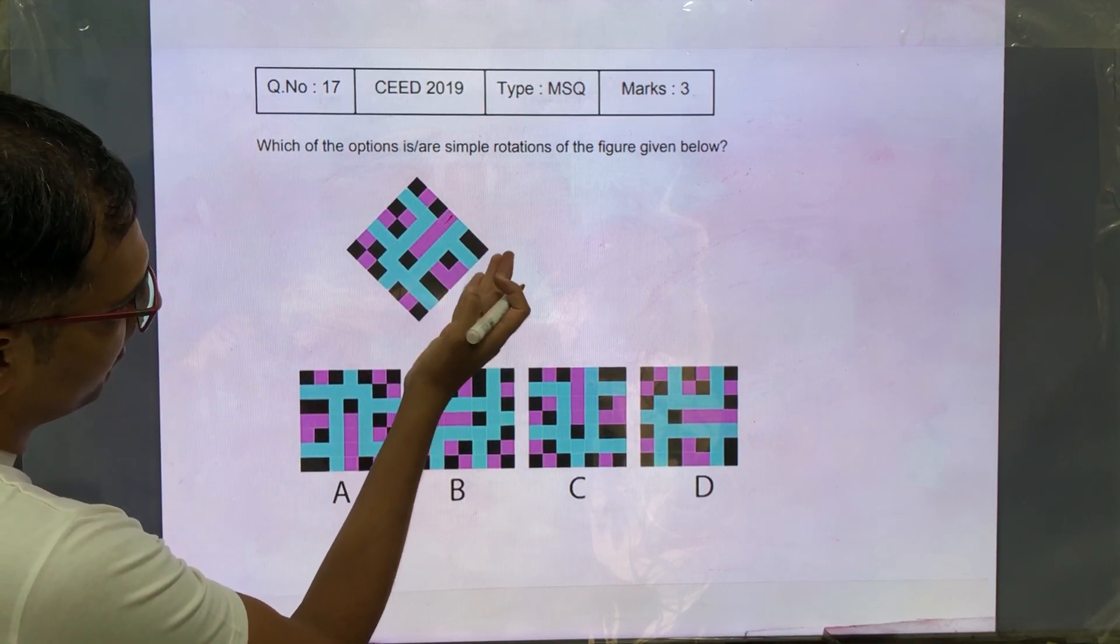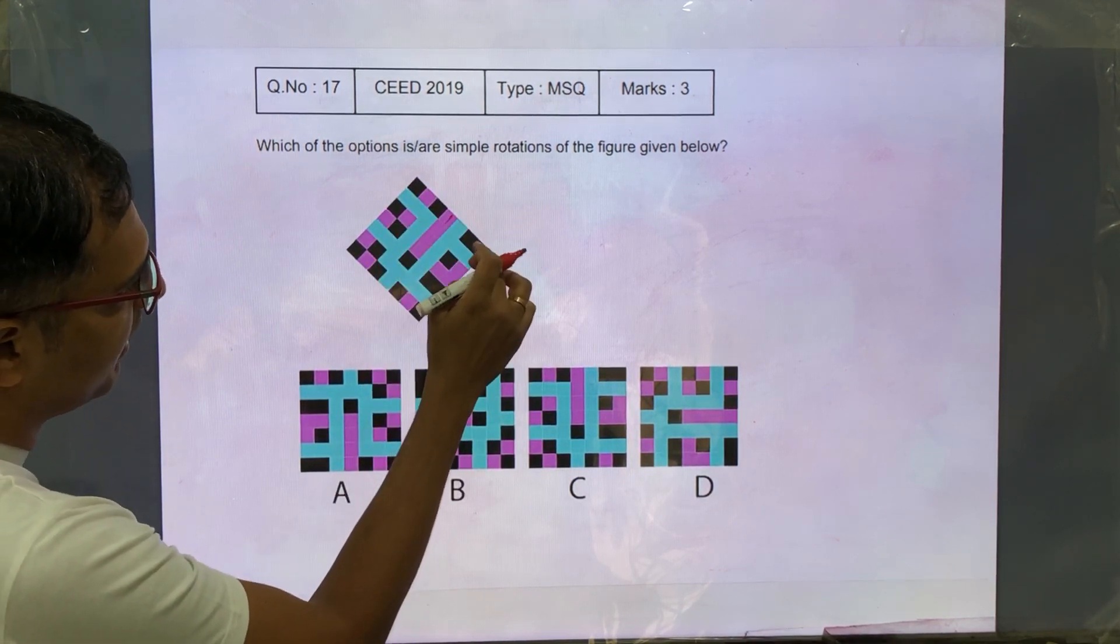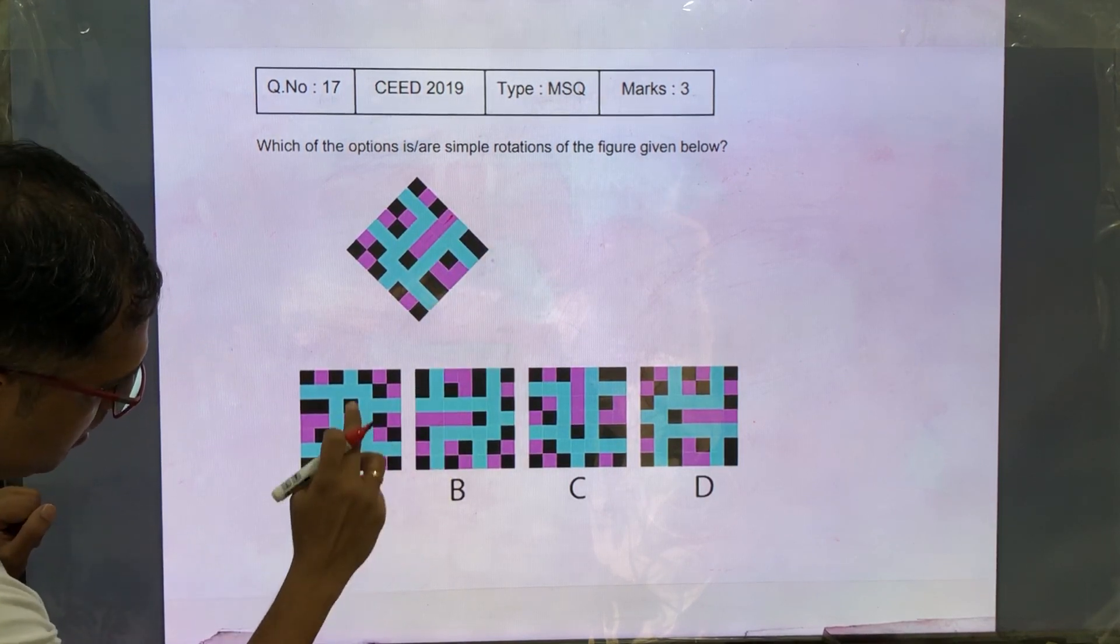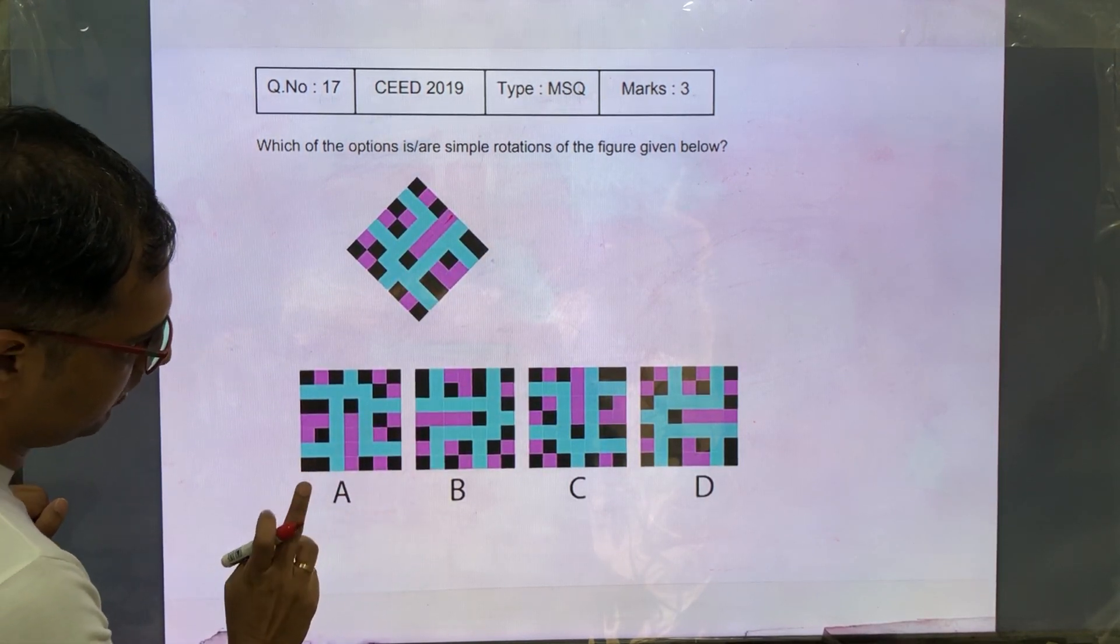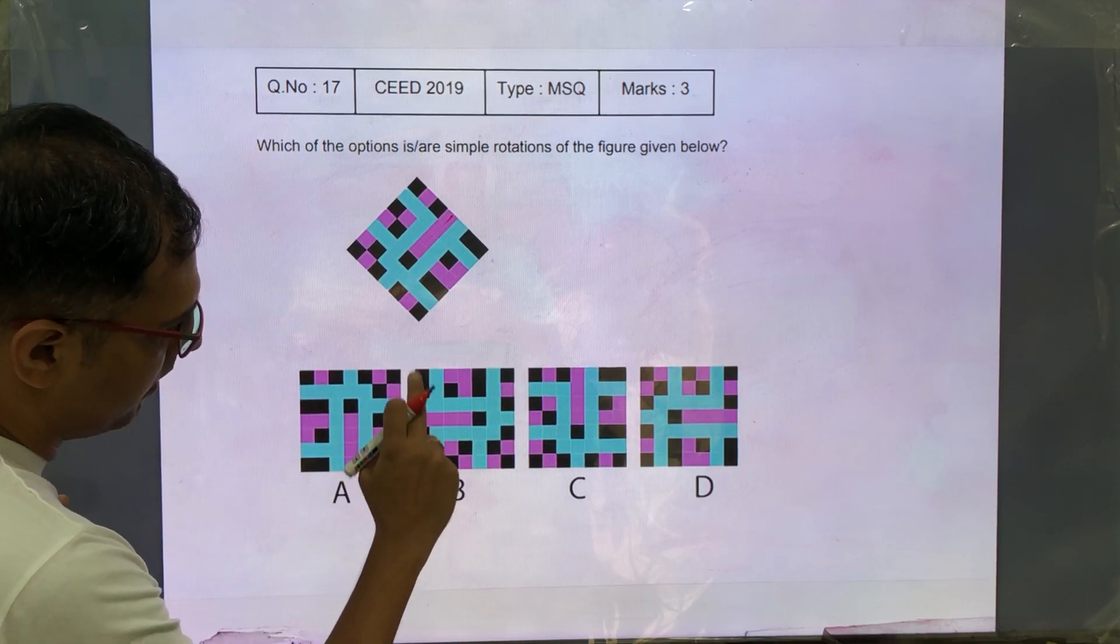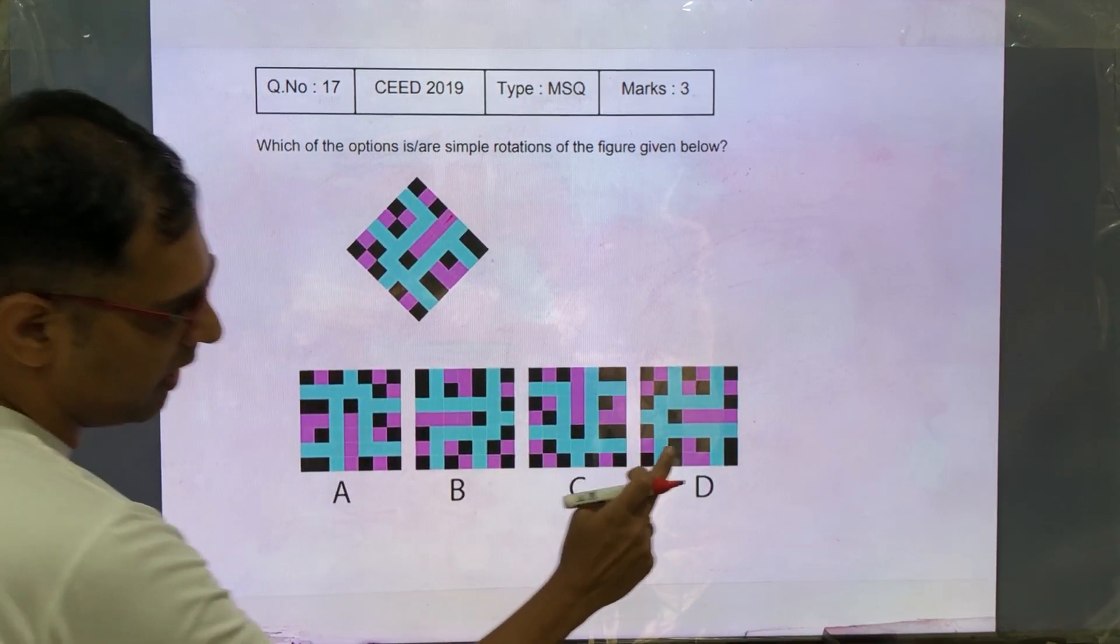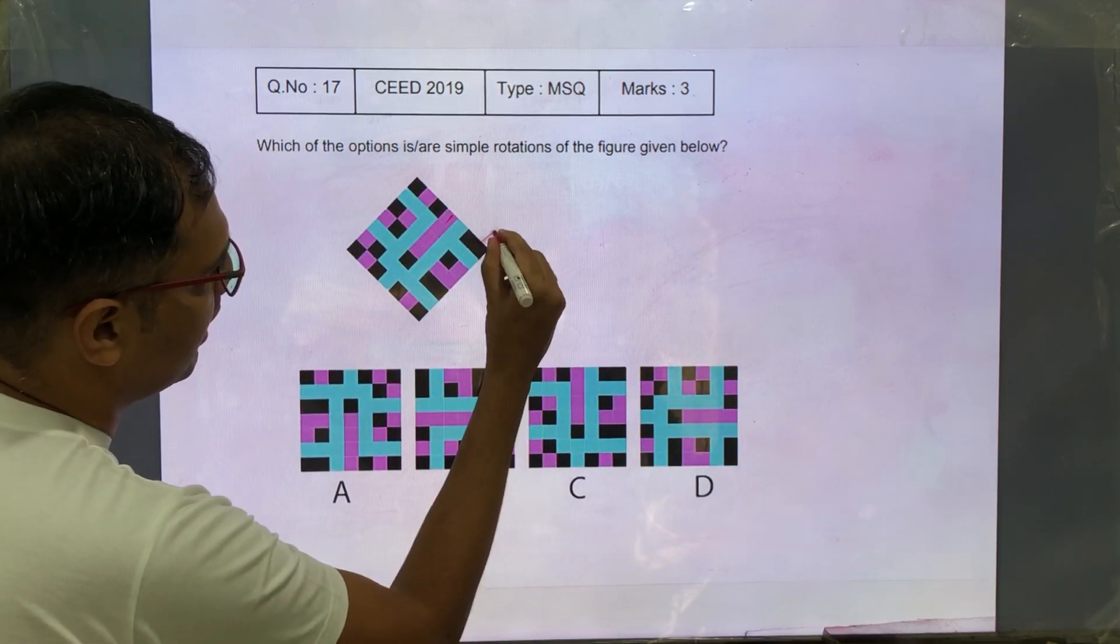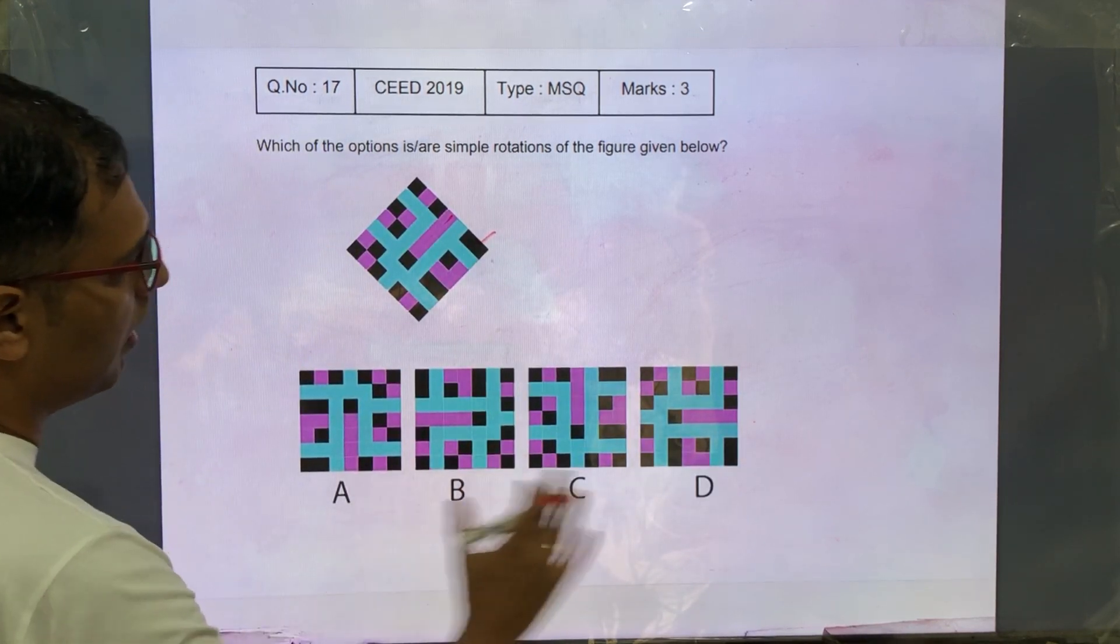Now, after that, going in a clockwise direction, we have a gap and then 2 brown. So gap and 2 brown, that's correct in A. A gap and 2 brown, that's correct in B. A gap and 2 brown, that's correct in C. Next to this, a gap and 2 brown. So that's still correct in D. In all the options.